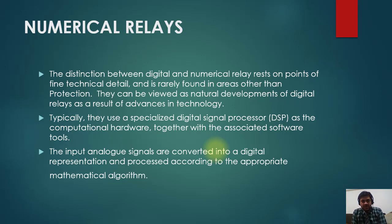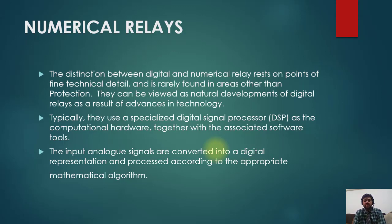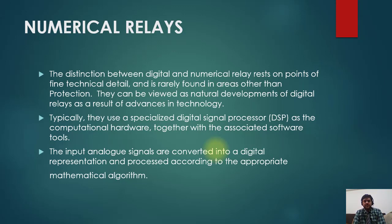The final type we are seeing are numerical relays. The distinction between digital and numerical relays rests on fine technical detail and is found in areas other than protection. They can be viewed as a natural development of digital relays as a result of advances in technology. Typically they use a specialized digital signal processor as computational hardware together with associated software. Analog input signals are converted into digital signals inside the relay and processed using appropriate mathematical algorithms.